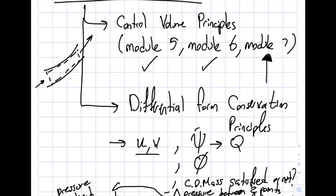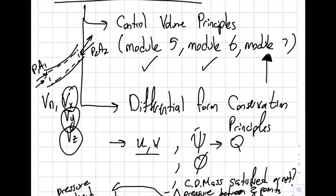If you reverse the direction of flow, the direction of the pressure forces does not change — they stay the same. Another common mistake involves the distinction between Vn and Vx, Vy, or Vz. The components Vx, Vy, Vz can have signs — positive, negative, with sine or cosine depending on the geometry. But Vn is always positive because the sign has already been accounted for, and it does not carry sine or cosine.